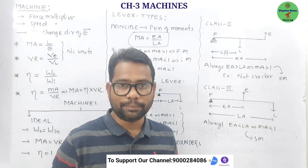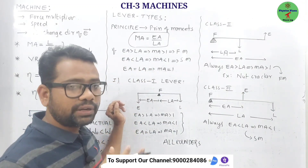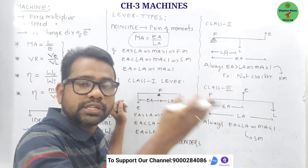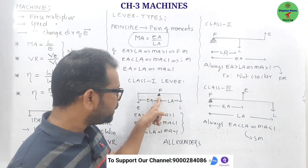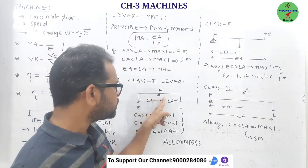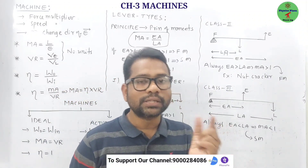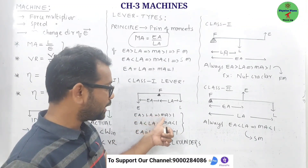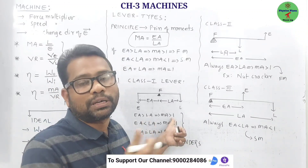Now, class one lever: for a class one lever, the fulcrum is in the middle, and load and effort are on either side. Since the fulcrum is in between and movable, you can move it towards the effort or towards the load — which means you can adjust the load arm and effort arm. So the effort arm can be greater than the load arm, making mechanical advantage greater than one — class one levers can act like force multipliers.